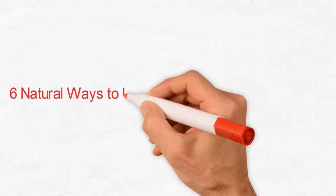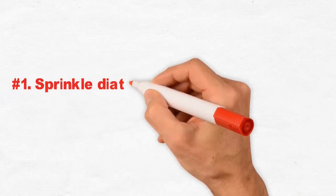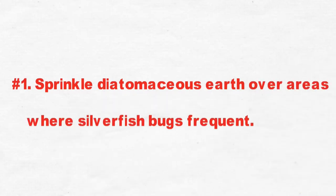Six natural ways to instantly get rid of silverfish bugs. Step 1: Sprinkle diatomaceous earth over areas where silverfish bugs frequent.